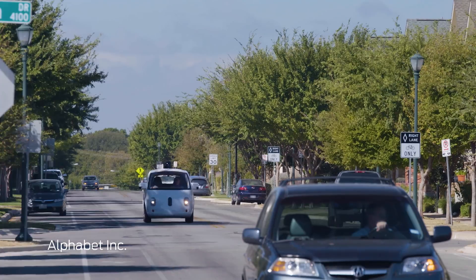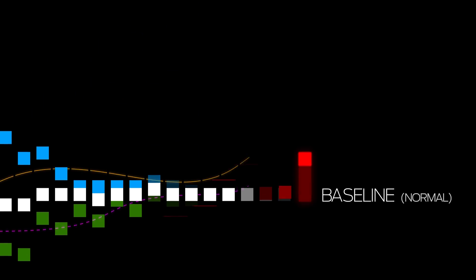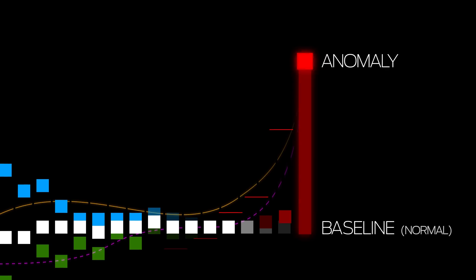One of the aspects of the self-driving network is the ability to automatically understand what's going on in the network. You establish a baseline and say this is normal behavior, and then you have maybe an anomalous situation.